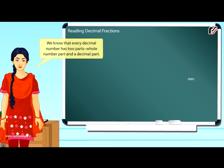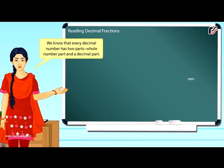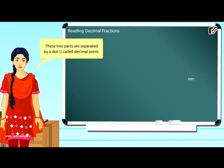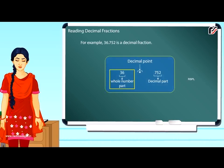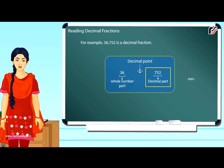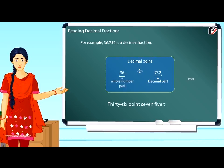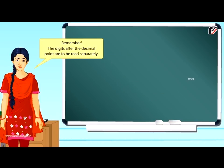Reading decimal fractions. Every decimal number has two parts: the whole number part and the decimal part. These two parts are separated by a dot called the decimal point. For example, 36.752 is a decimal fraction. 36 is the whole number part, the dot is the decimal point, and 752 is the decimal part. We read it as thirty-six point seven five two. Remember, the digits after the decimal point are to be read separately.